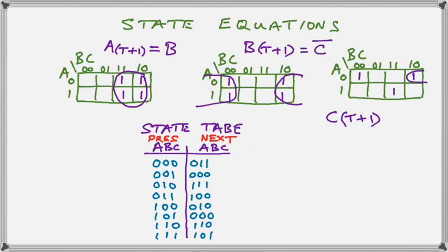In the B one we have the ones on zero, two, four, and six. And in the C ones we have it on zero, two, and seven. You can see that in our present next state table and there we have circled and written the equations for our next state in A, B, and C.